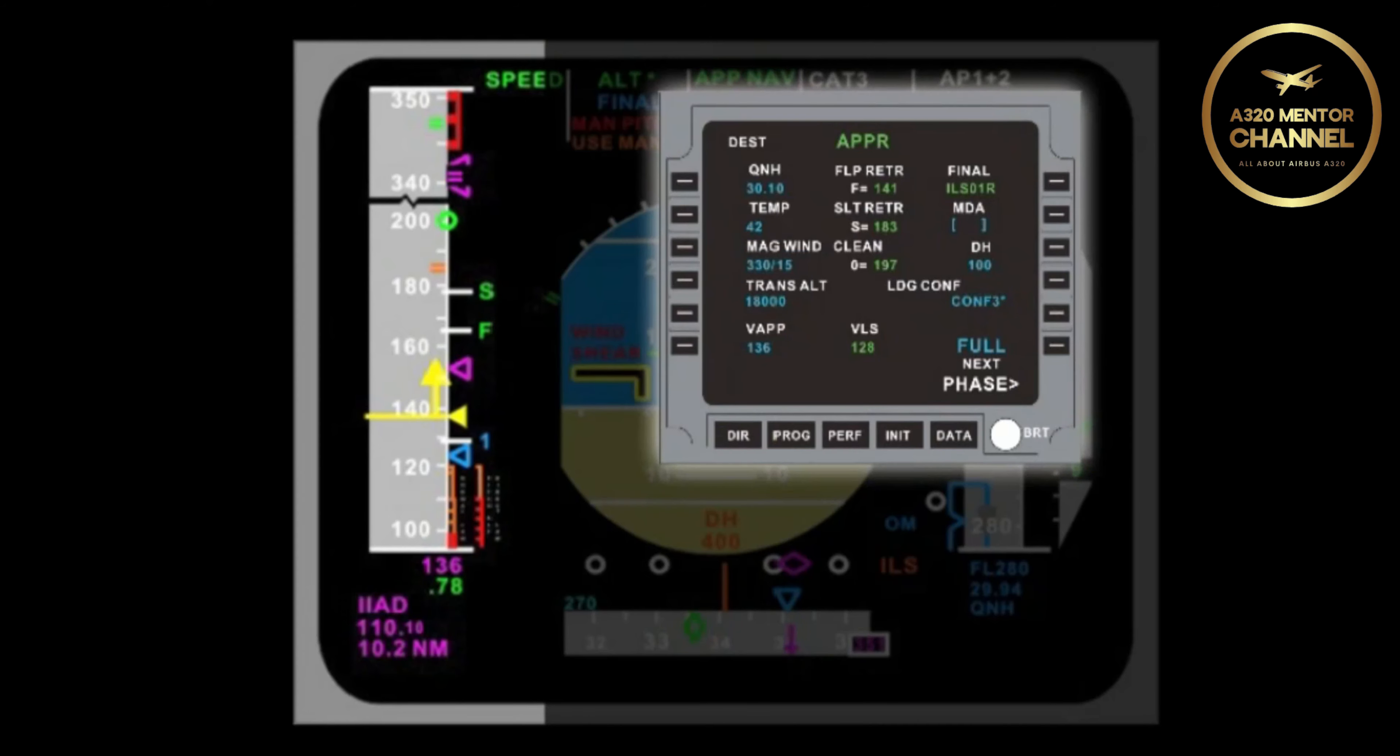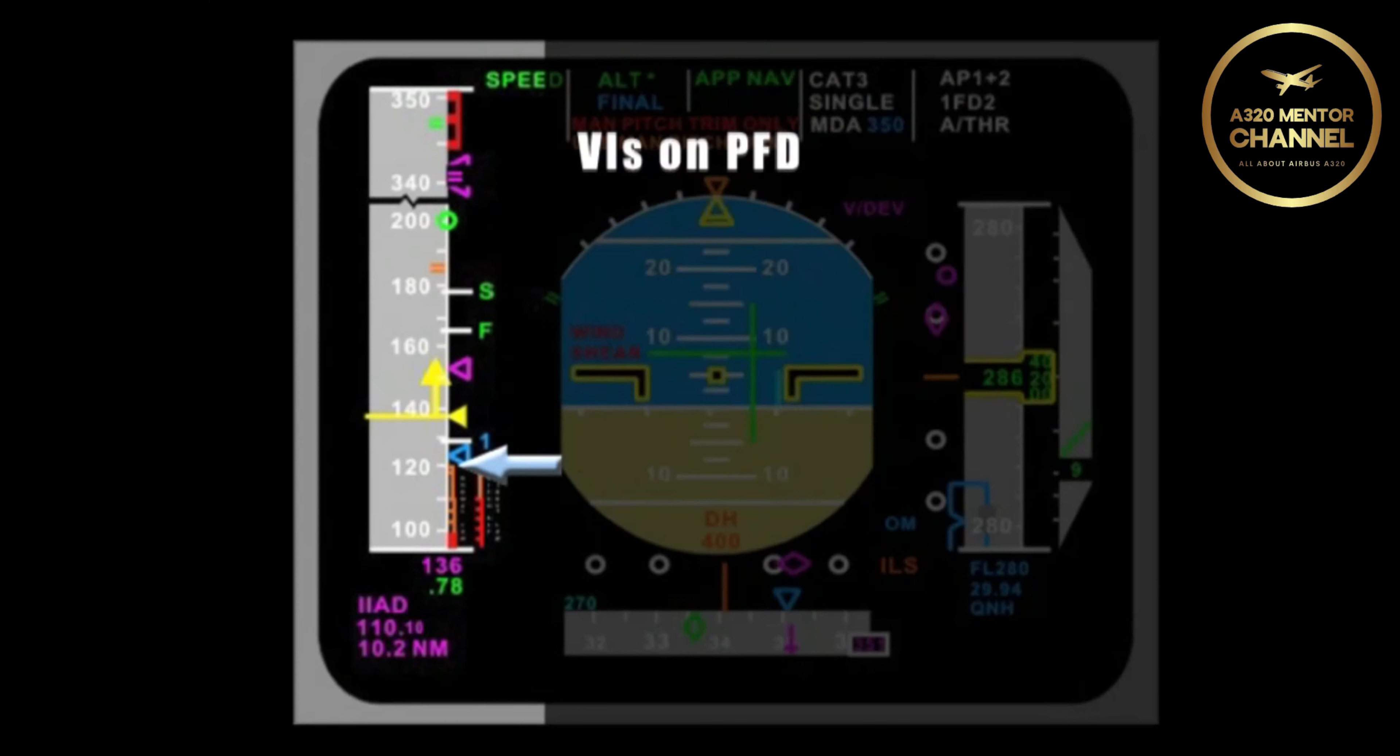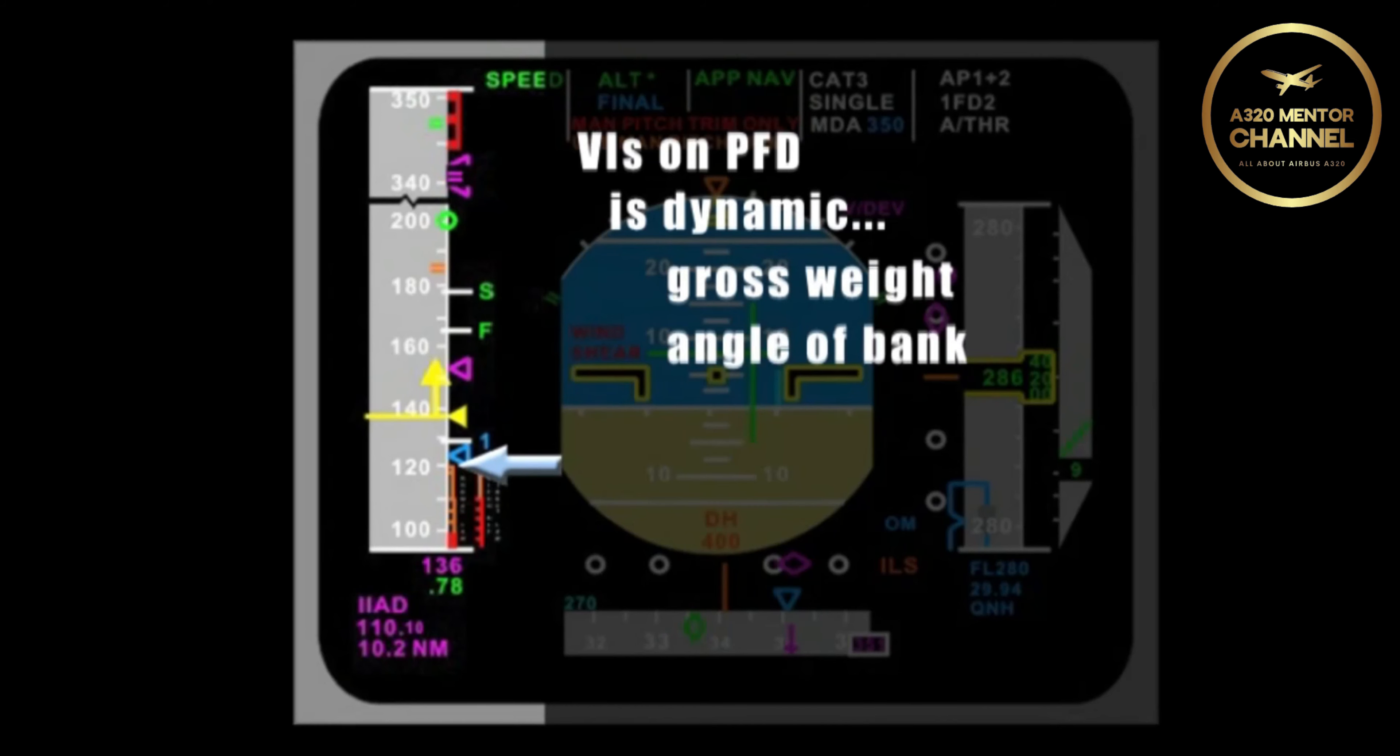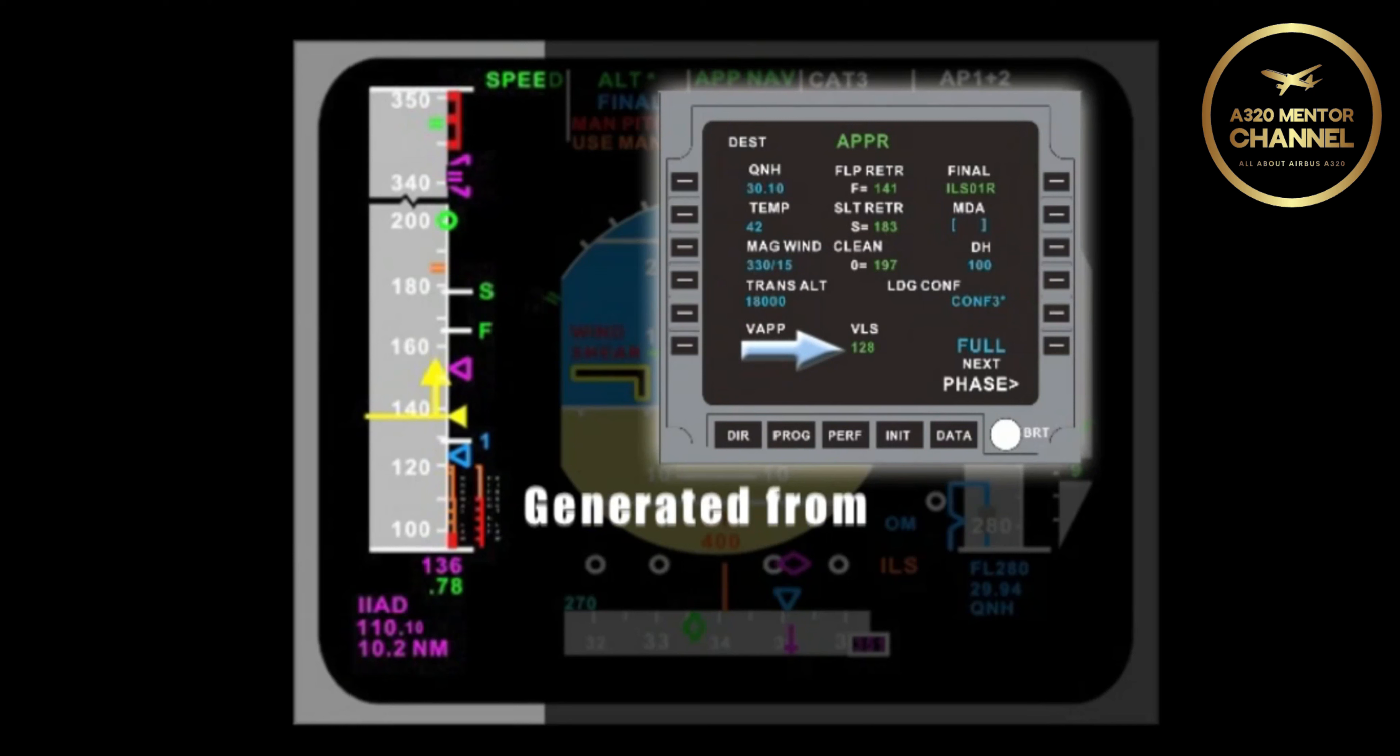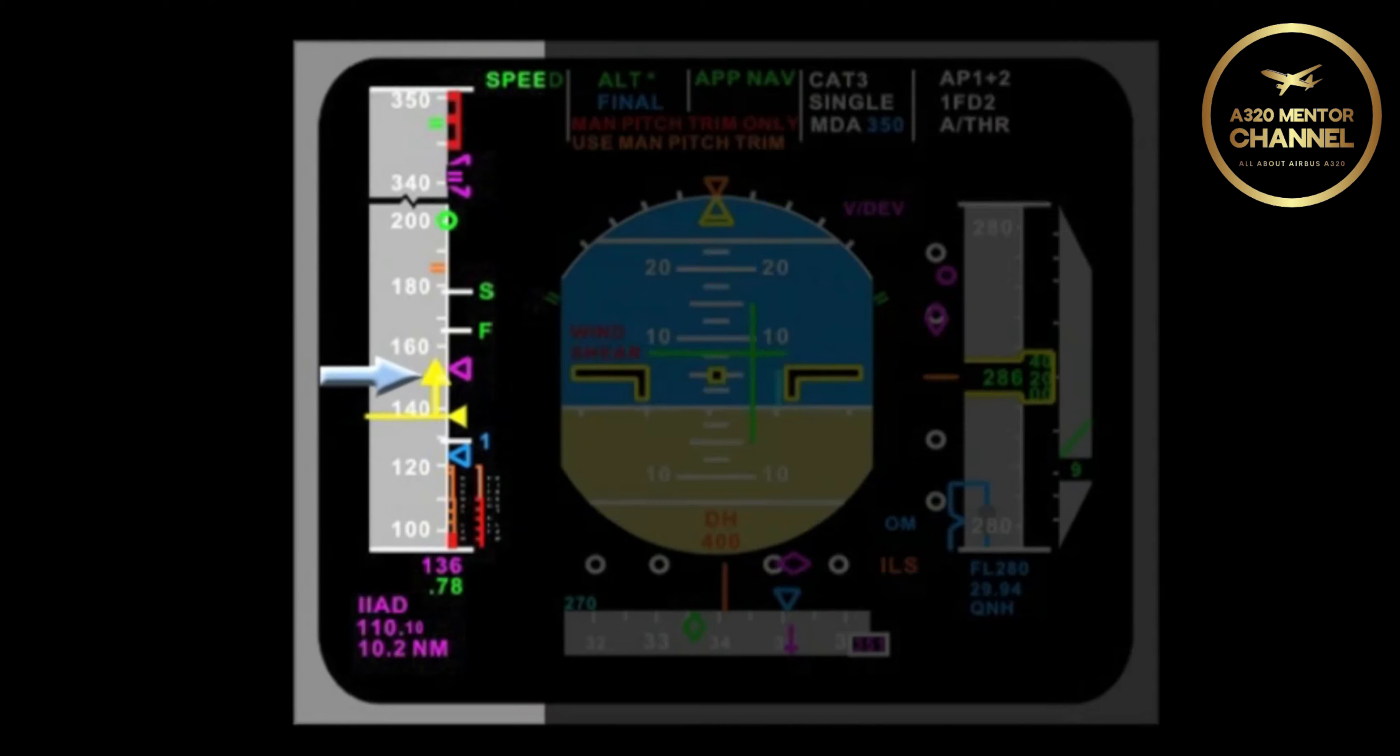On the performance approach page in the MCDU, you will find a VLS speed in green. What is the difference between that VLS and the VLS represented on your PFD? The VLS on the PFD is generated by the FACS. It's a dynamic number that changes regularly. It takes into account not only the gross weight, but the angle of bank, load, and all other factors. The number in the MCDU is generated from the FMGC and based specifically on the aircraft gross weight. This is really used to develop our V approach speed.